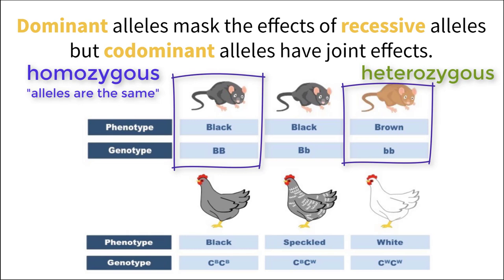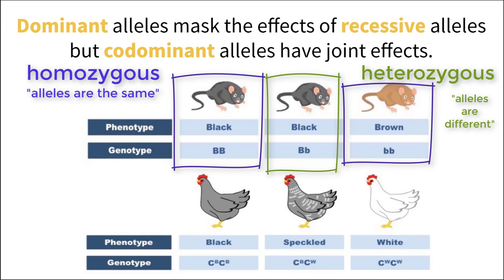A heterozygous genotype describes a scenario where two alleles are different — one being dominant and the other recessive, still using the same letter. In this scenario, the dominant allele will always be expressed in the phenotype, and the recessive allele will be masked. It is only when two recessive alleles are together that the recessive phenotype of the trait is expressed in the organism, whether it be fur color or any other trait.